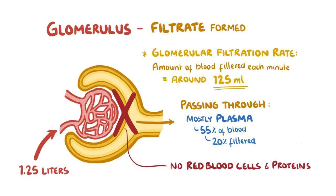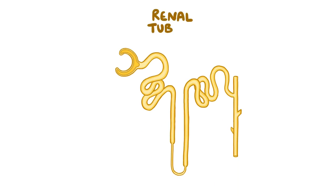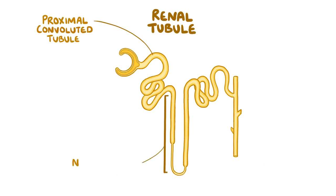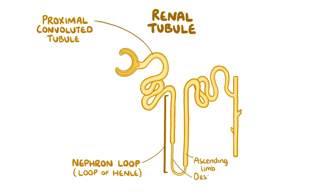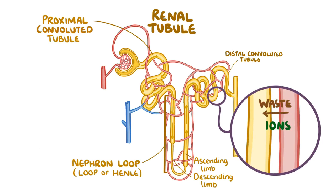This filtrate then enters the renal tubule. The renal tubule is made up of a proximal convoluted tubule, the nephron loop — also known as the loop of Henle — which has an ascending and a descending limb, and finally the distal convoluted tubule. As filtrate makes its way through the renal tubule, waste and molecules such as ions and water are exchanged between the tubule and the peritubular capillaries.